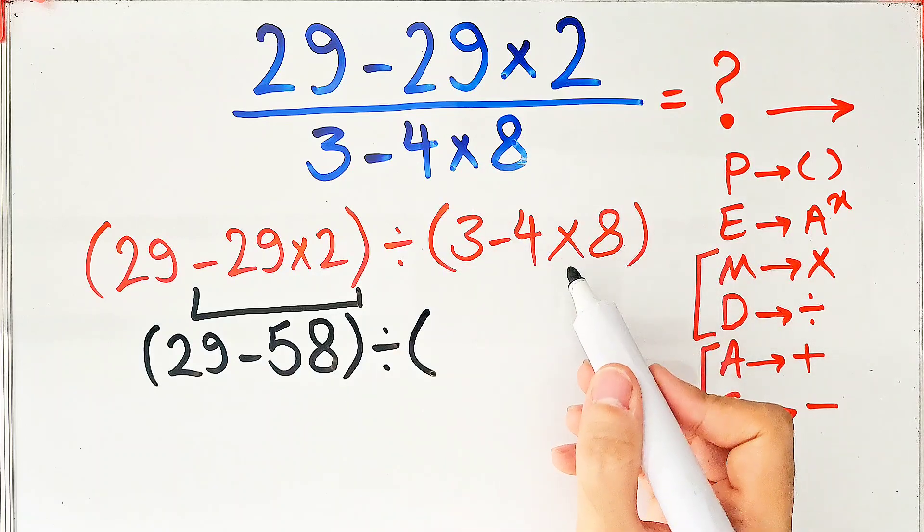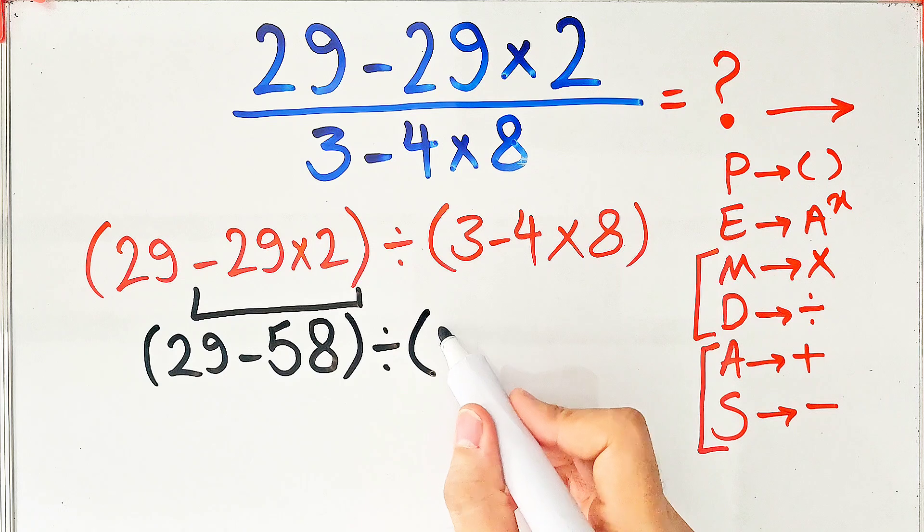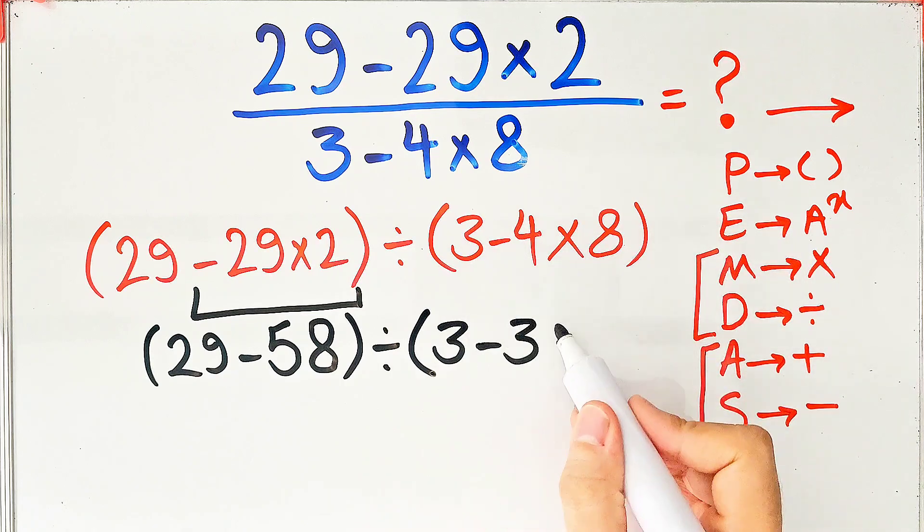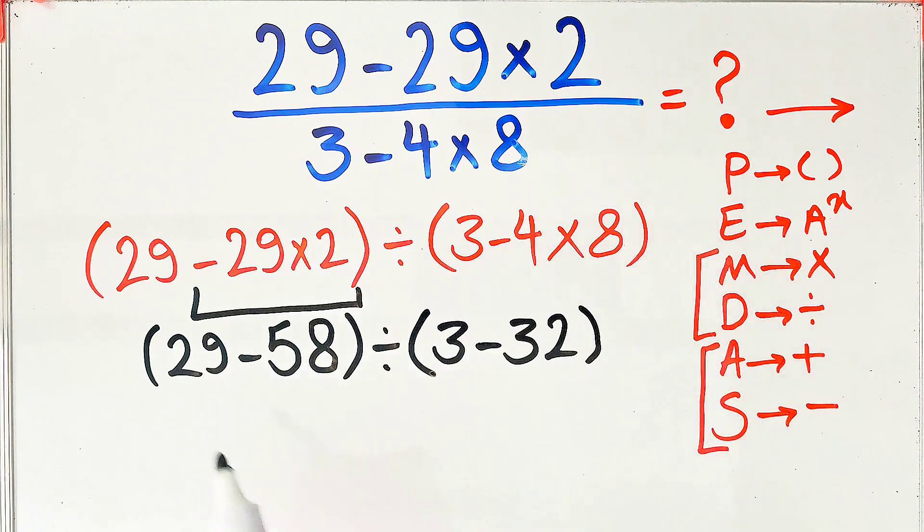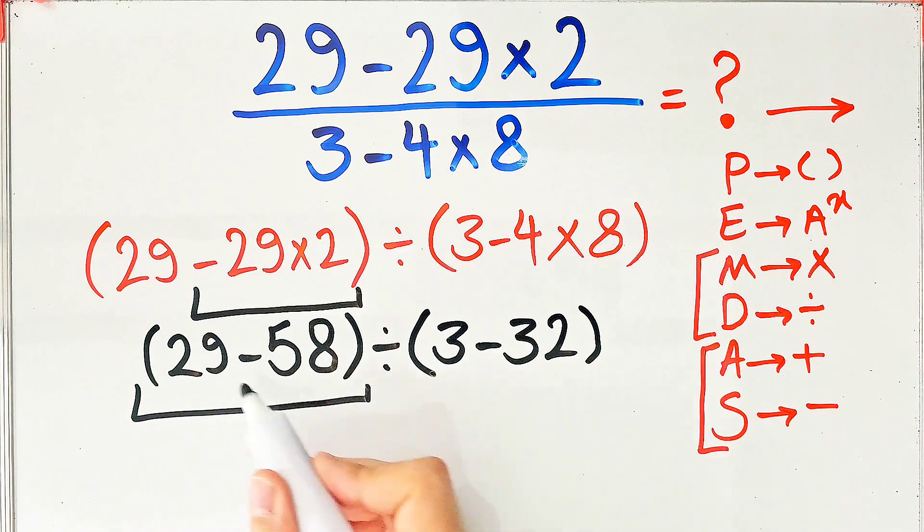We have 3 minus 4 times 8. 4 times 8 equals 32, so 3 minus 32 equals negative 29. And 29 minus 58 equals negative 29.